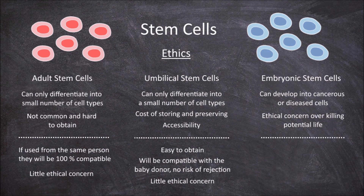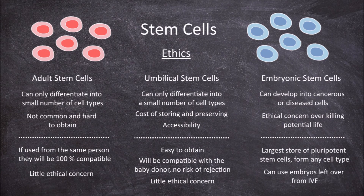The main benefit of using embryonic stem cells is that they are the largest source of pluripotent stem cells, and because the stem cells are pluripotent, they can form into any cell type. The cells can be removed from embryos that are left over from IVF — from embryos that would have stopped developing and died regardless.